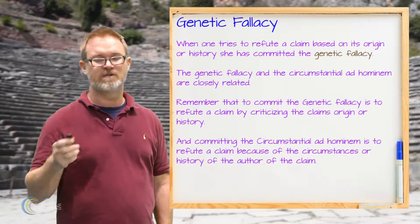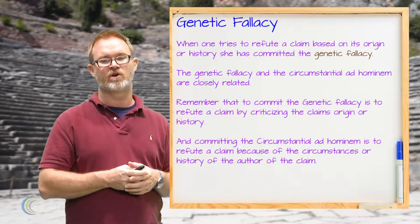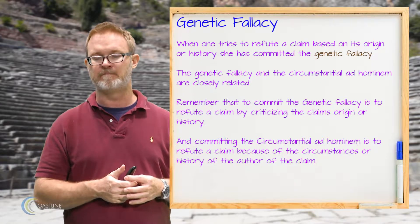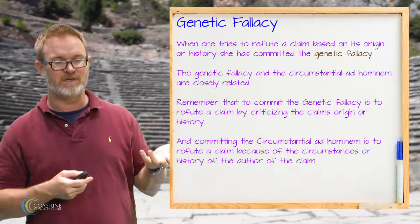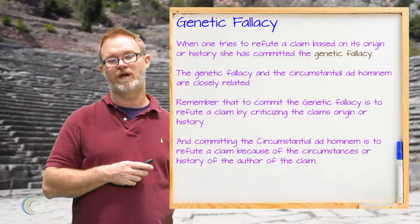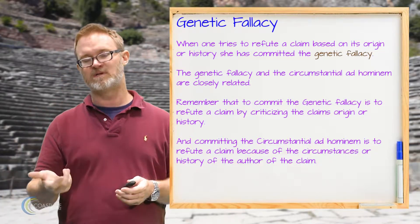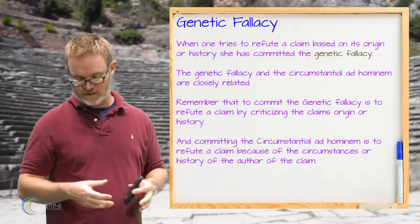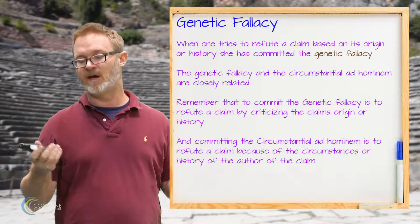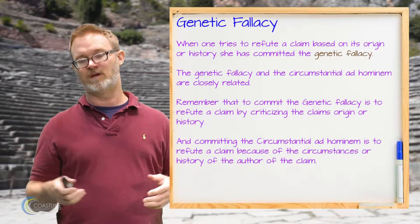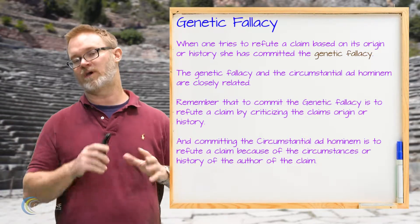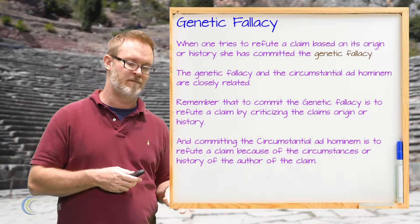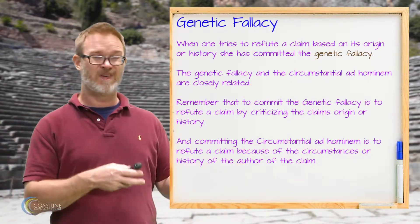The next one is the genetic fallacy. It isn't actually an ad hominem, but it looks a lot like a circumstantial ad hominem. Genetic fallacy is dismissing a claim because of the history or circumstances of the claim itself — whereas circumstantial ad hominem is dismissing a claim because of the circumstances or history of its author. For example, saying 'I don't believe in God because when people first started believing in God, they also believed in magic and superstition — so it can't be true.' Of course, the history of a claim doesn't impact its truth or falsehood. You need to think about the reasons given now for such a claim.